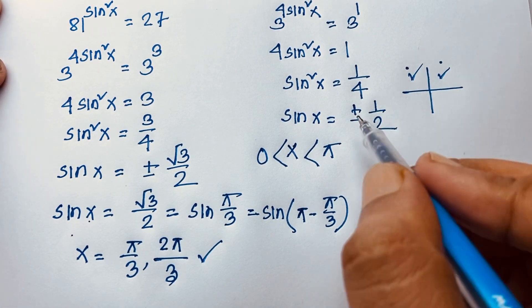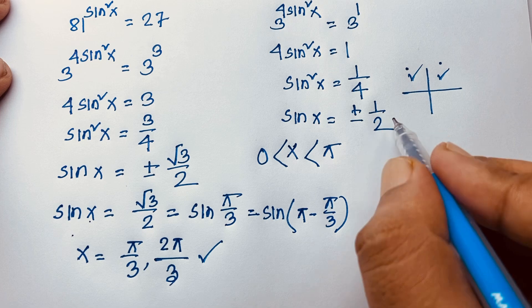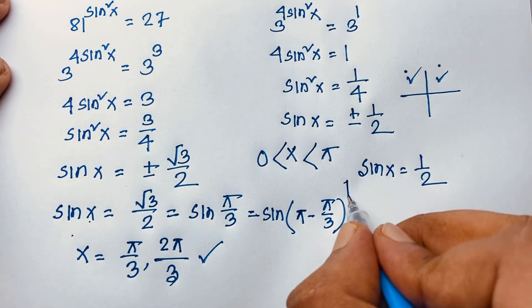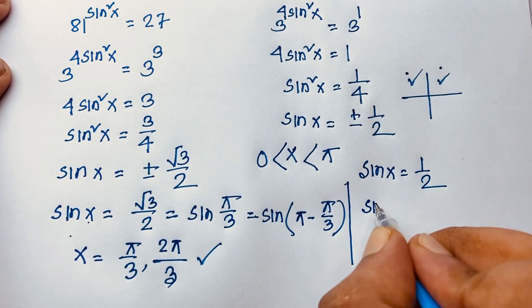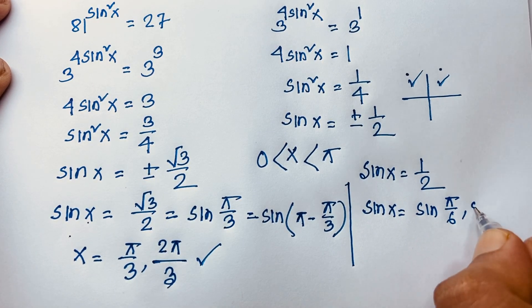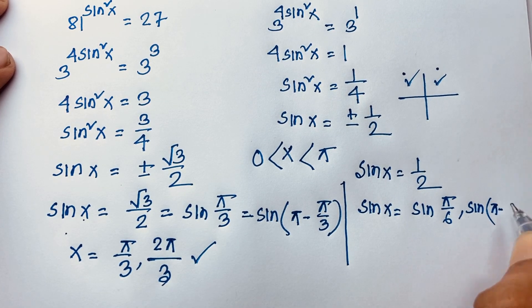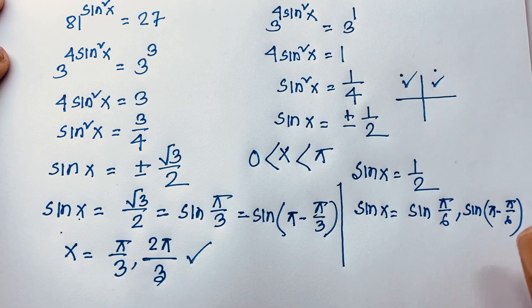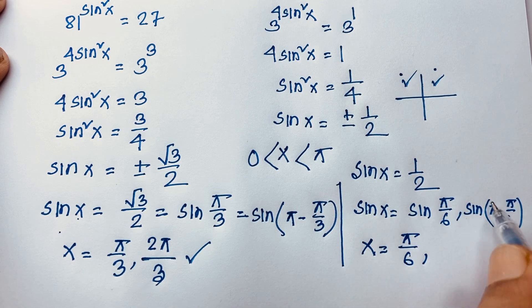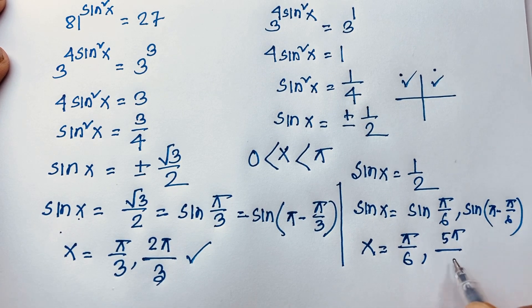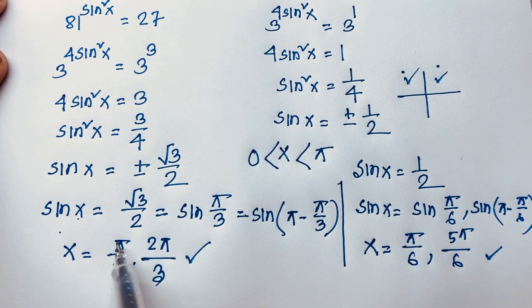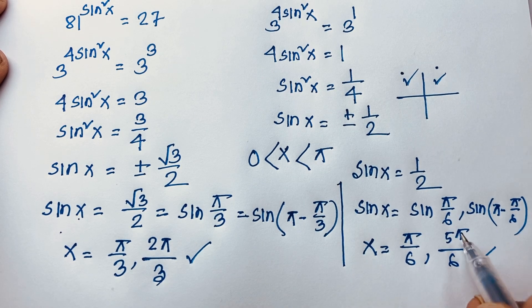For sinx = 1/2: we know sin(30°) = sin(π/6) = 1/2, so x = π/6. The second quadrant solution is x = π − π/6 = 5π/6. Therefore we have four solutions in total: x = π/3, 2π/3, π/6, and 5π/6. These are our final answers to this Math Olympiad question.